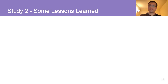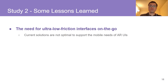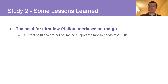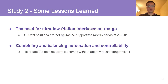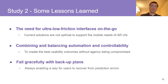Our results highlighted three lessons learned. First, current solutions are not good enough to transition AR UIs, and we need to develop ultra-low friction interfaces on the go when users have limited cognitive bandwidth. Second, similar to the Semi-Auto condition, we need to combine and balance automation with controllability to create the best usability outcomes without agency being compromised. Finally, we need to research ways of failing gracefully with backup plans to enable users to recover from prediction errors.